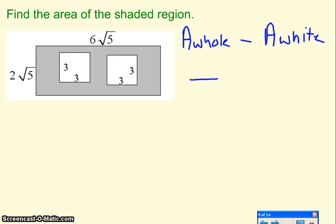So in this problem, we have two parts to it. We need to find the area of the whole thing. We need to find the area of the white cutouts, and then we'll see if we can combine like terms at the end.